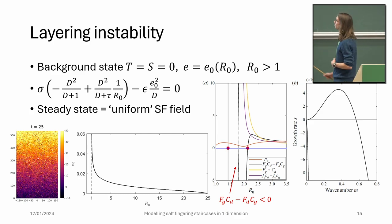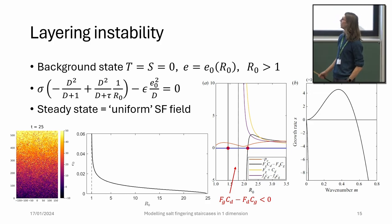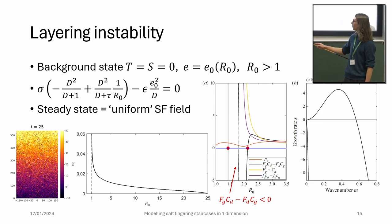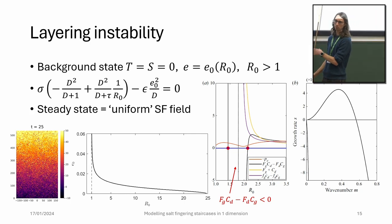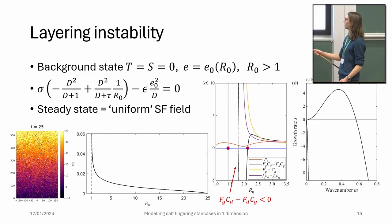If we take that system, it admits background states where T̃ and S̃ are the perturbation temperature and salinity. The energy depends on R_0 based on the steady state energy equation and it looks a bit like this. You can imagine this background state in a full simulation looking like this - it's statistically uniform but not really uniform.